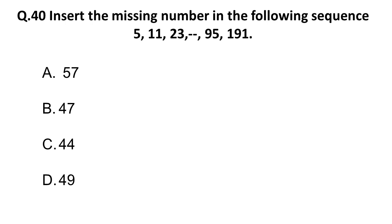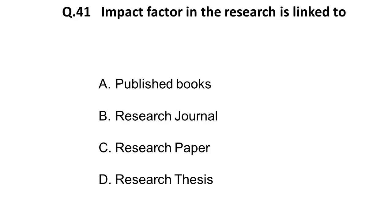Question 40: Insert the missing number in the following sequence: 5, 11, 23, ___, 95, 191. From 5 to 11, they added 6; from 11 to 23, they added 12. Adding double of 12, which is 24, to 23 gives 47. Then adding 48 to 47 gives 95, and so on. The correct answer is 47.